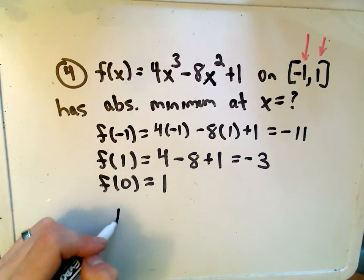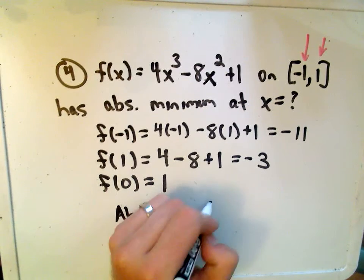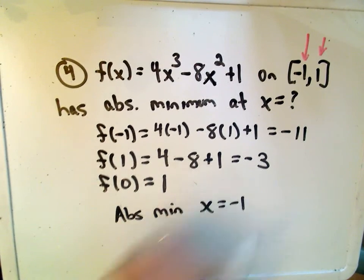So to me, I would say there's an absolute minimum at the x-coordinate of negative 1.